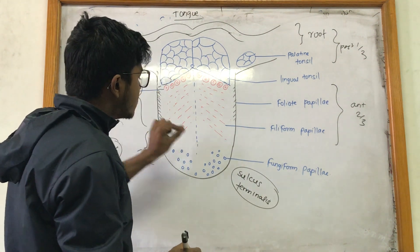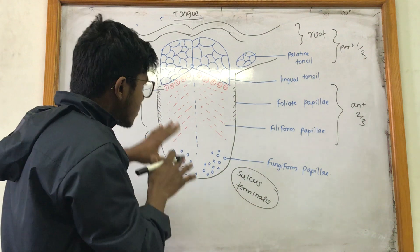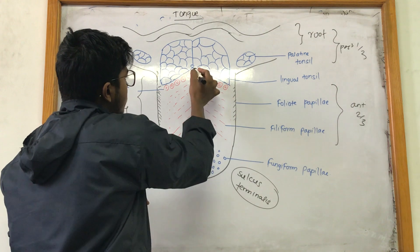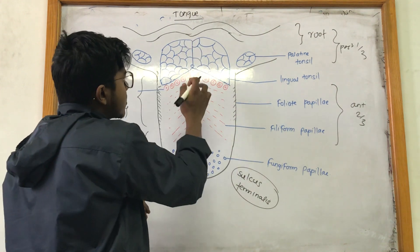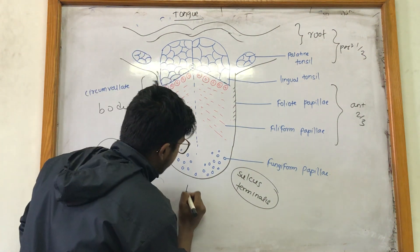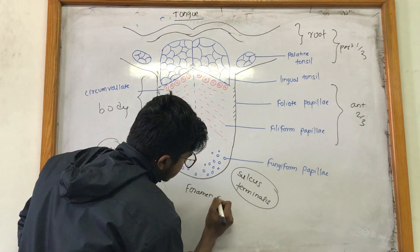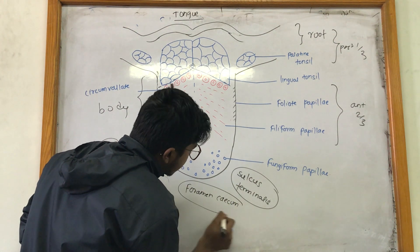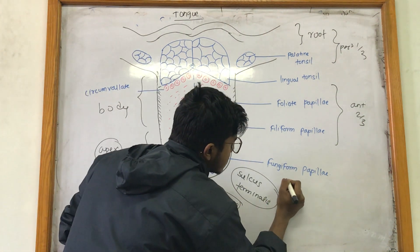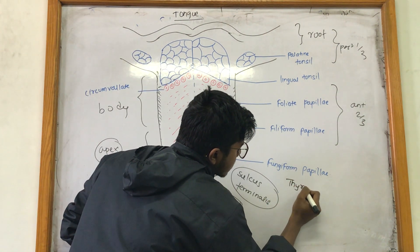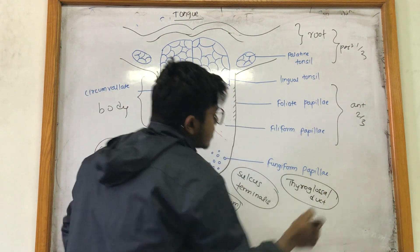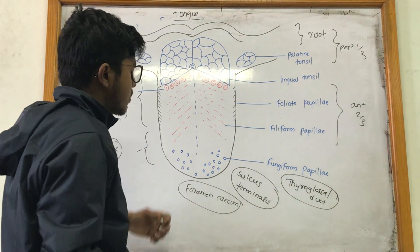The sulcus terminalis is a V-shaped structure that divides the tongue into anterior and posterior parts. At the junction of the median line and the sulcus terminalis, there is a pit — a depression known as the foramen cecum. This is the embryonic remnant of the thyroglossal duct, which at some stage forms the thyroid gland in the embryo.